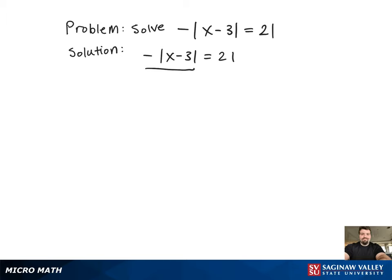As in any absolute value problem, what we want to do is solve for the absolute value. Now that the absolute value is solved for, we can go ahead and see that since it's equal to a negative number, that's not going to have any solutions, because the absolute value has to be greater than or equal to zero.